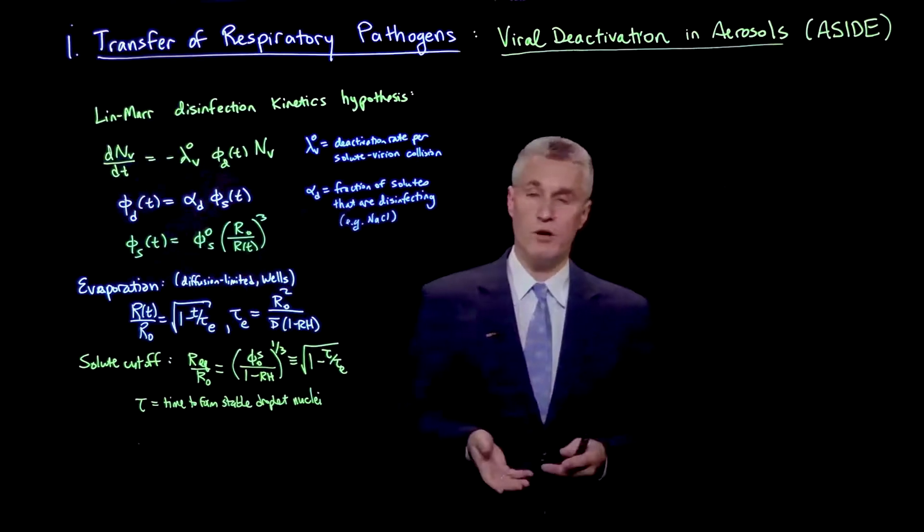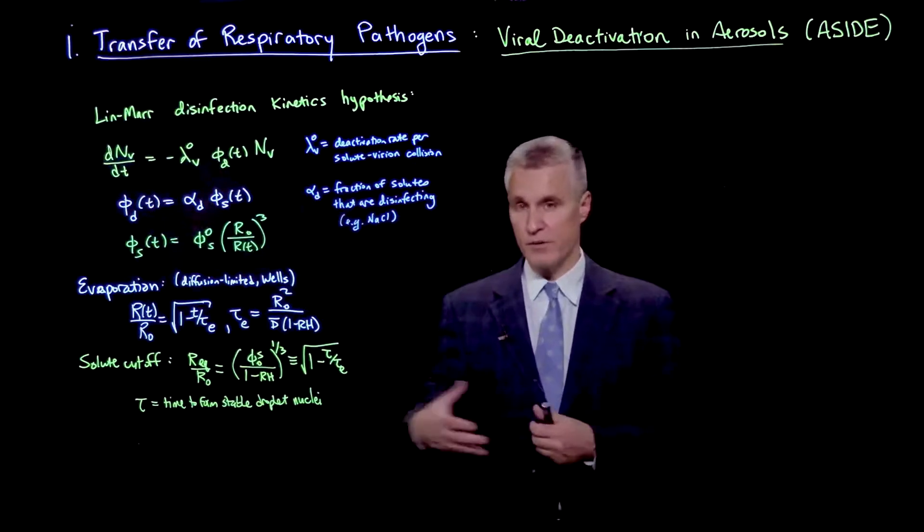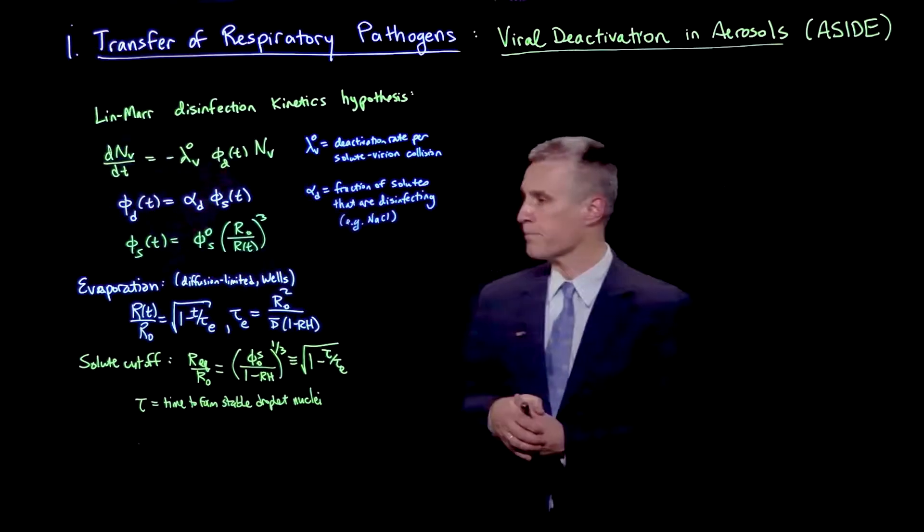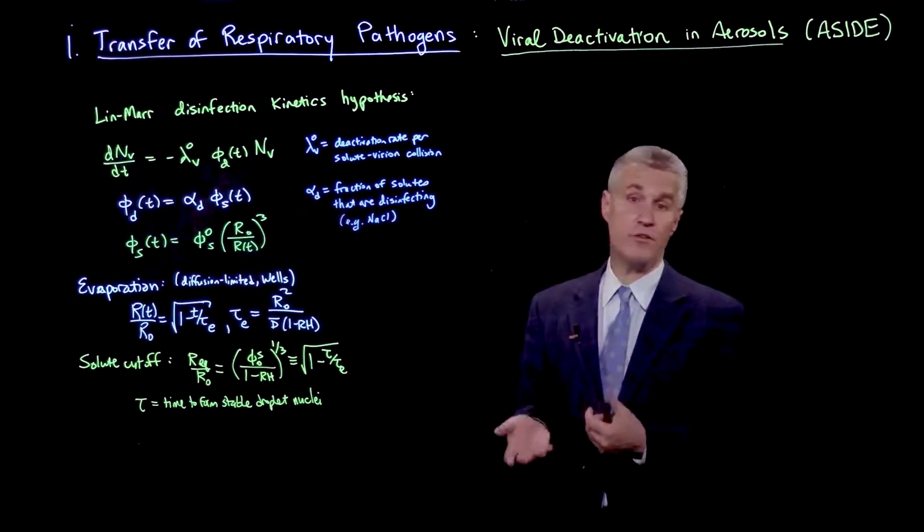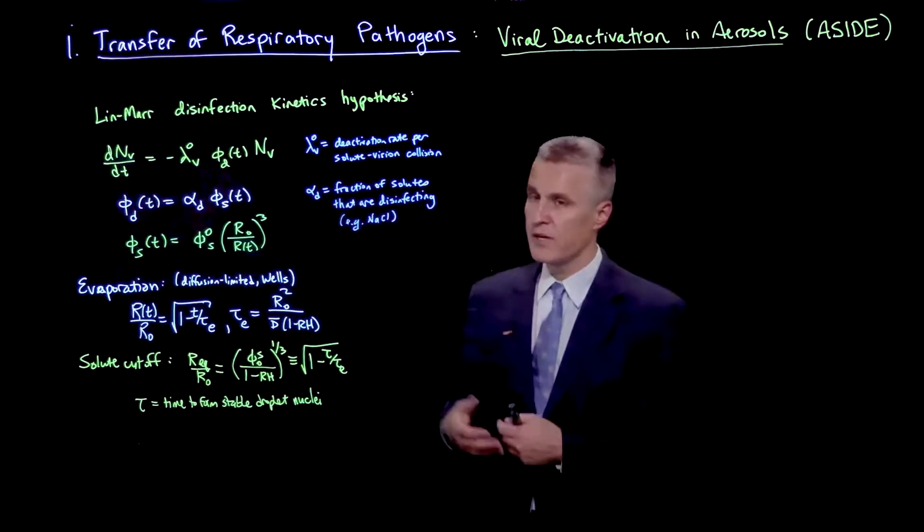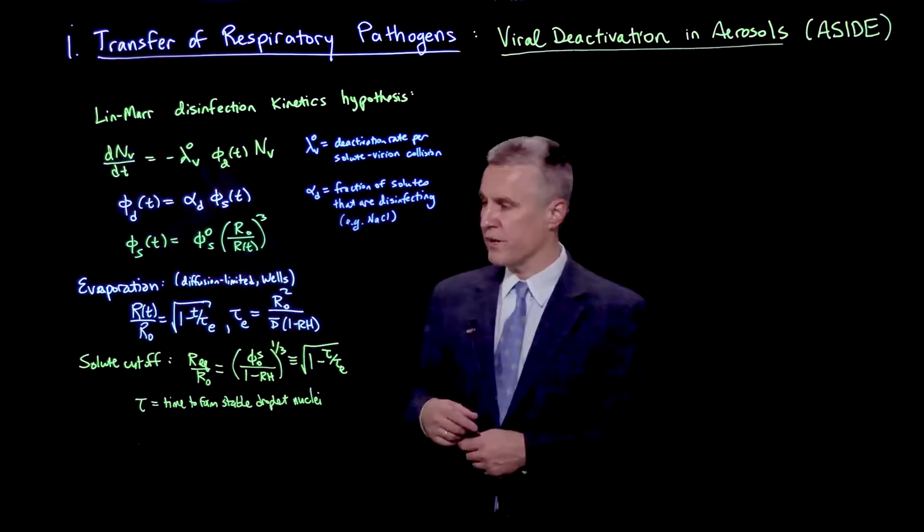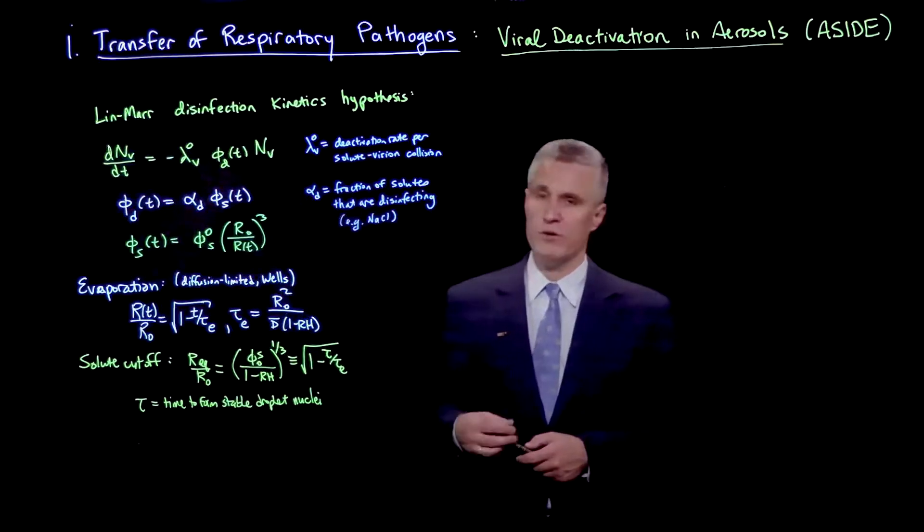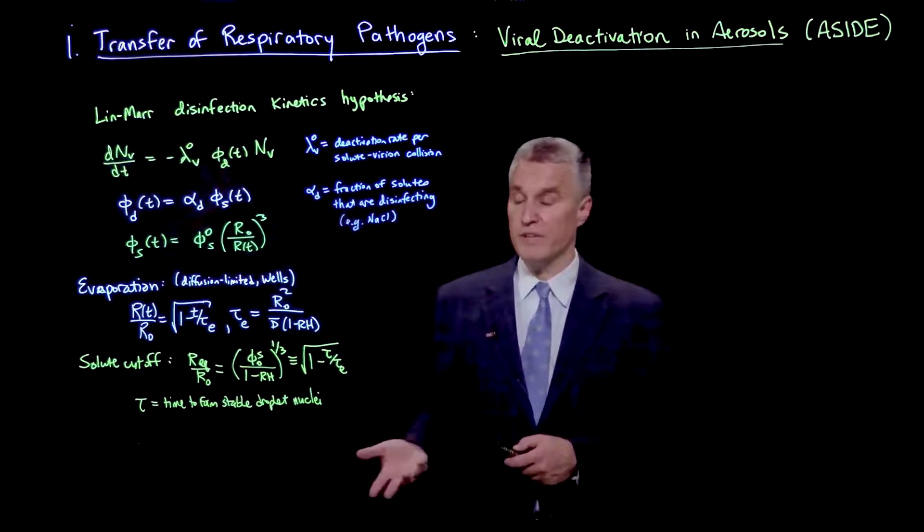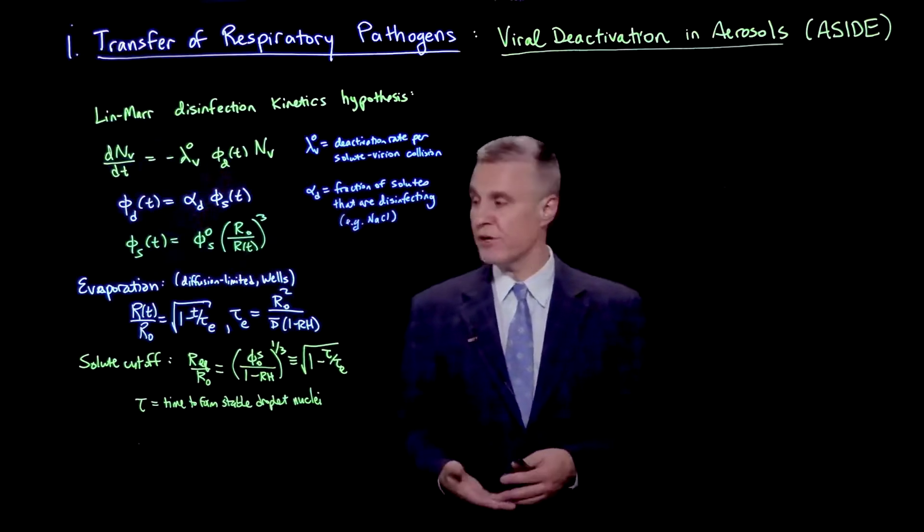Let's recall some of our results from earlier in this chapter, having to do with Wells' theory of evaporation. If we consider diffusion-limited droplets, we've shown that the radius of the droplet versus time, relative to the initial radius r0, is square root of 1 minus t over tau e, where tau e is the evaporation time.